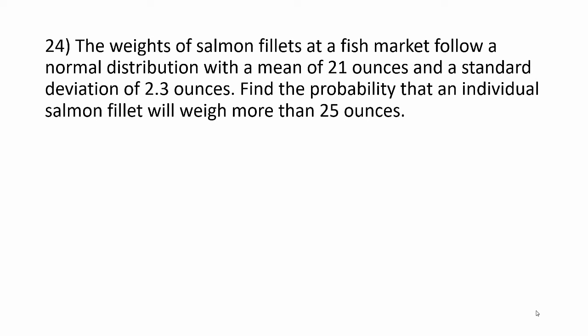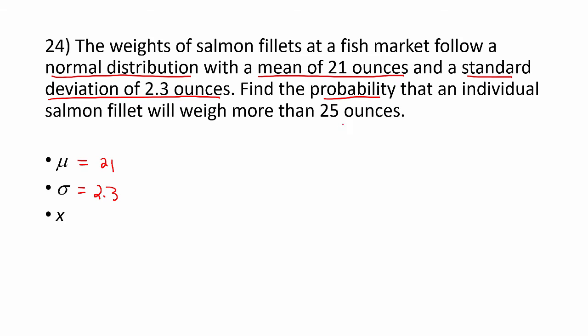In this video, we'll take a look at problems involving the normal probability distribution. The weights of salmon fillets at a fish market follow a normal distribution with a mean of 21 ounces and a standard deviation of 2.3 ounces. We want to find the probability that a salmon fillet will weigh more than 25 ounces.